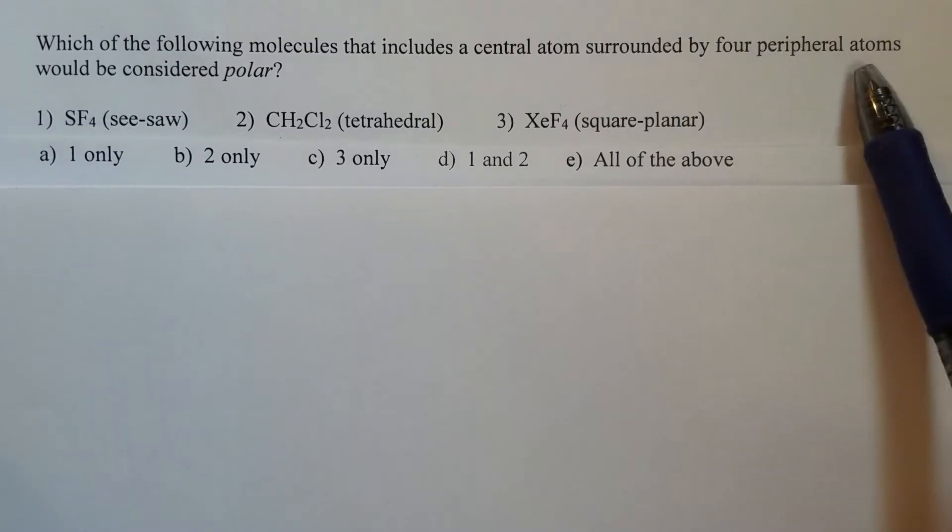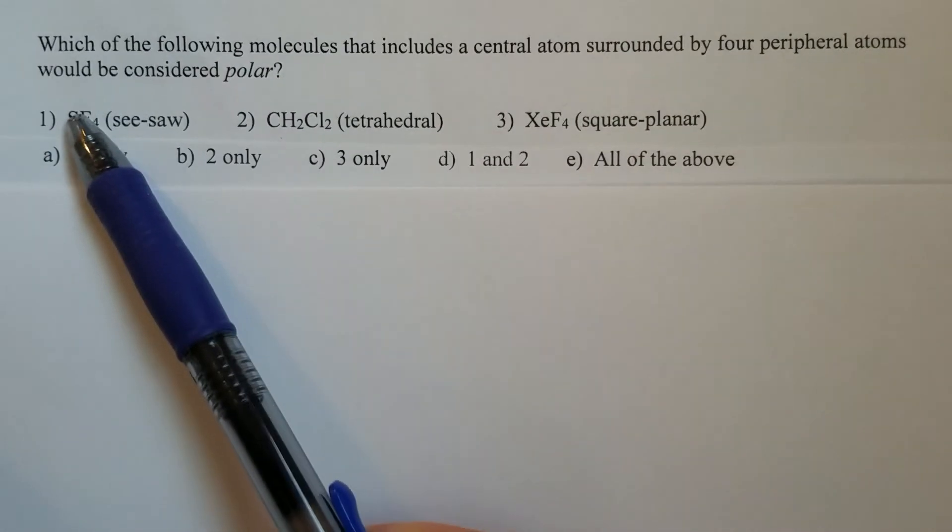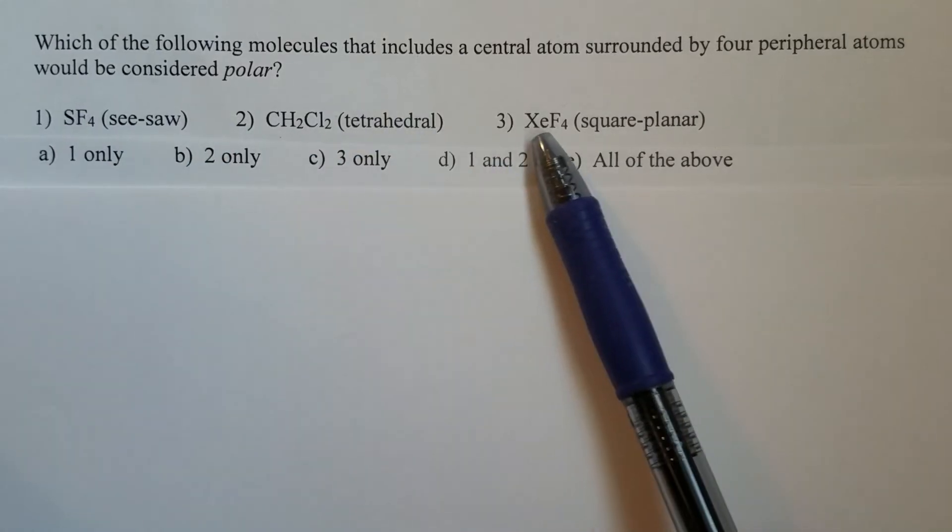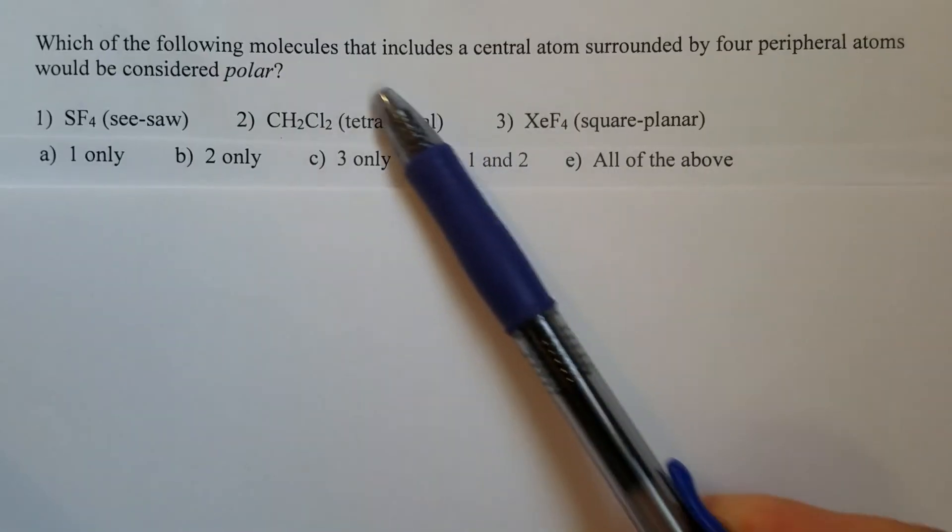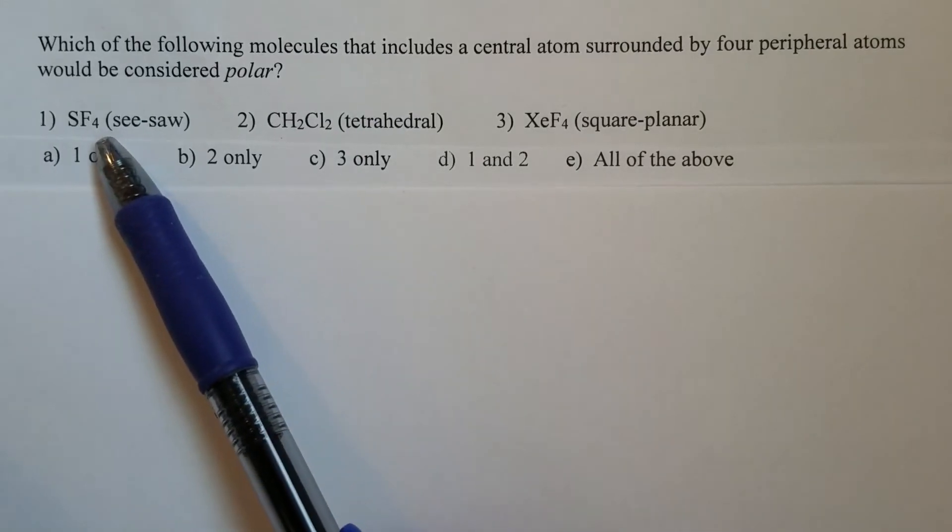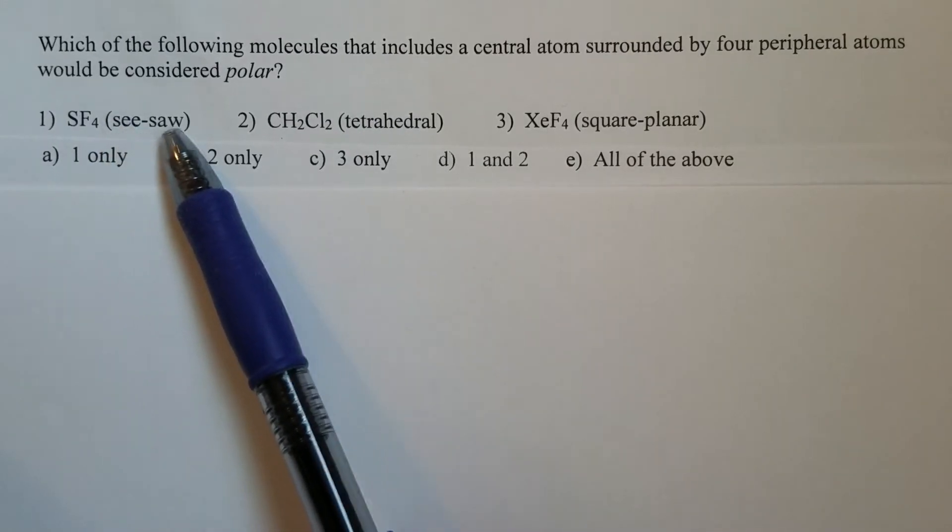If the peripheral atoms are identical, like in molecule one and three, then the polarity depends upon the symmetry of the molecular geometry.